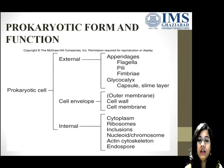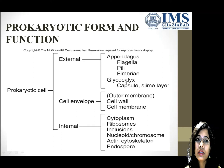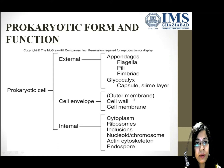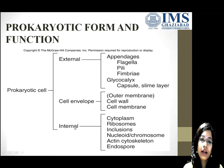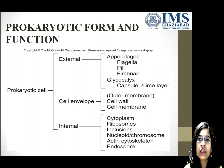Prokaryotic form and function: the prokaryotic cell is divided into external and internal parts. In the external part we study appendages — flagella, pili, fimbriae — next is glycocalyx: capsule and slime layer. After that the external structure includes the cell envelope — outer membrane (note: not all bacteria possess an outer membrane), but all bacteria possess a cell wall and cell membrane. The internal structure consists of cytoplasm, ribosomes, inclusions, nucleoid/chromosome, actin cytoskeleton, and mesosomes. Membrane-bound organelles are absent.